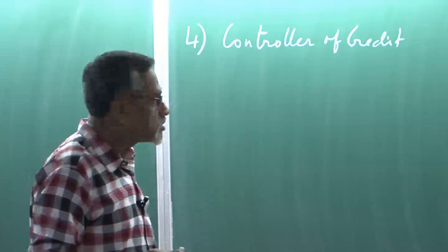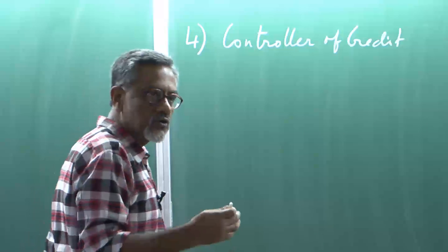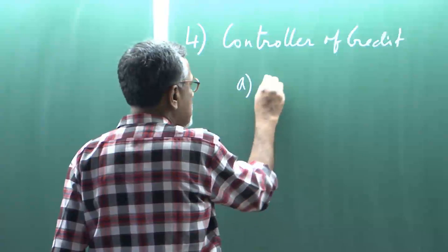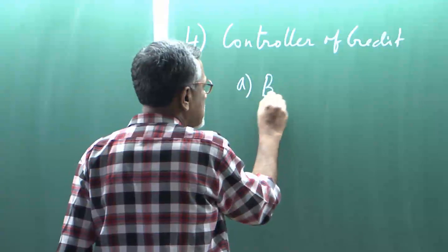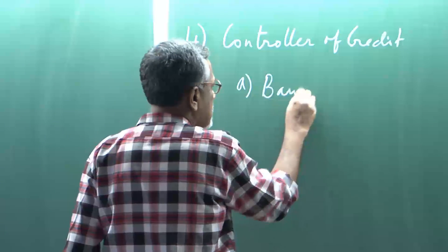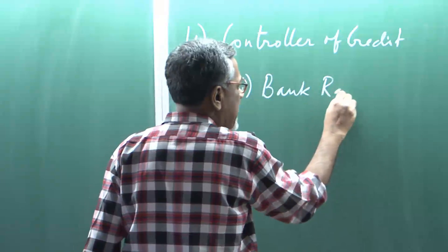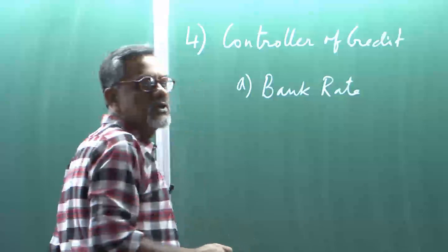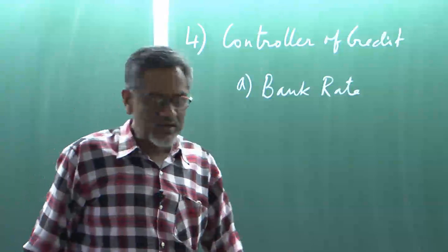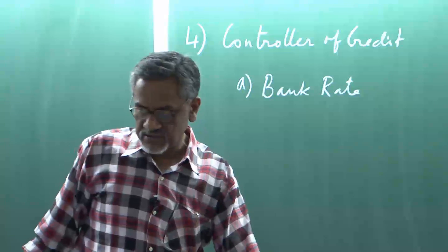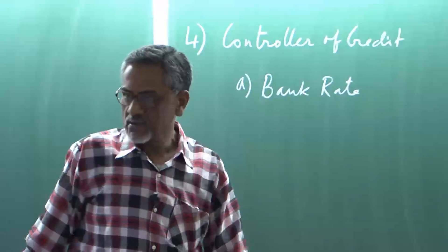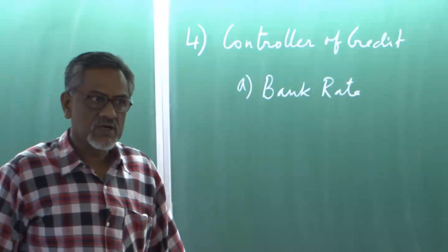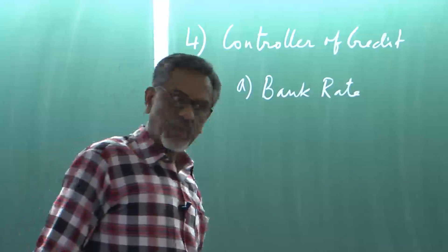What are the instruments, the traditional instruments they use to control credit? The first one is called bank rate. What is bank rate? Bank rate is simply the interest rate of the central bank. So when the central bank lends money to commercial banks, the interest rate it charges is the bank rate.